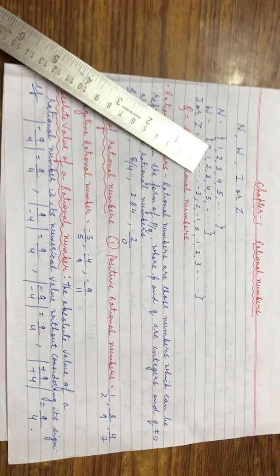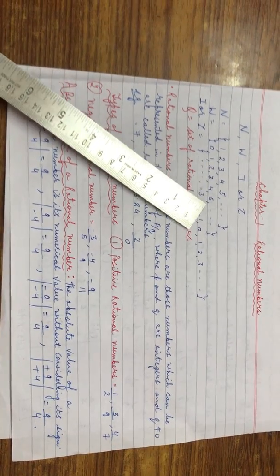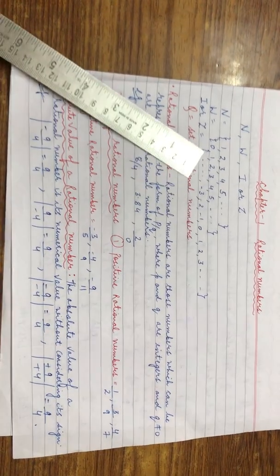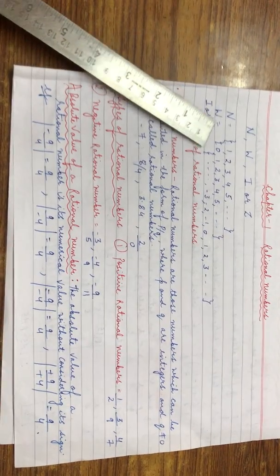Whole numbers: If we add 0 to the set of natural numbers, we get the set of whole numbers. The set of whole numbers is represented by capital W.